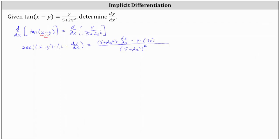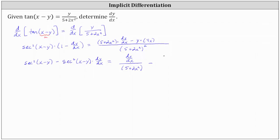For the next step, let's distribute secant squared of the quantity x minus y on the left, and break the right up into two separate fractions. Distributing gives us secant squared of the quantity x minus y times dy/dx equals on the right: the quantity 5 plus 2x squared times dy/dx divided by the square of the quantity 5 plus 2x squared — where one factor simplifies out, leaving dy/dx divided by one factor of 5 plus 2x squared — minus 4xy divided by the square of 5 plus 2x squared.